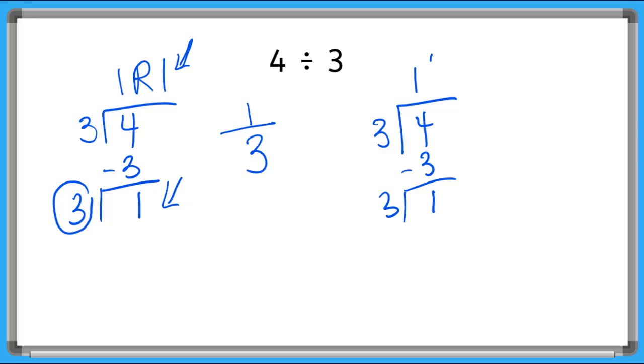So I'm going to say my remainder is one. Remember it goes in the numerator and then my divisor which is three goes in the denominator. So now I've written my remainder of one here as a fraction one-third. So I can say four divided by three is equal to one and one-third.